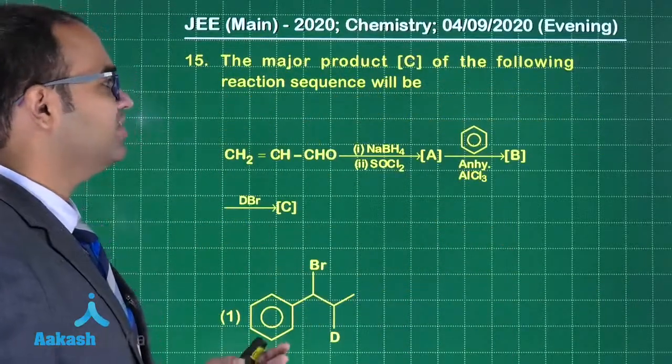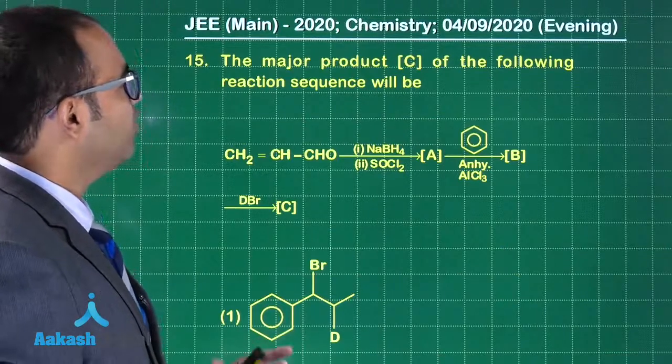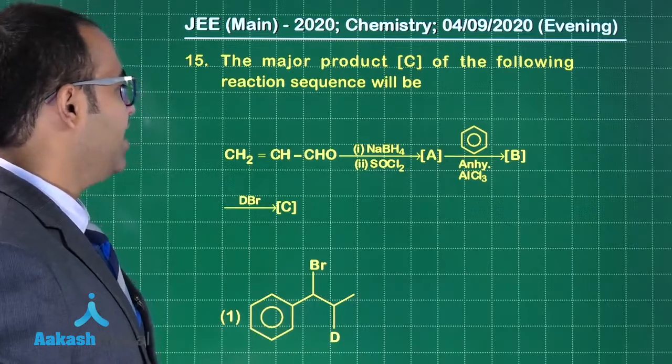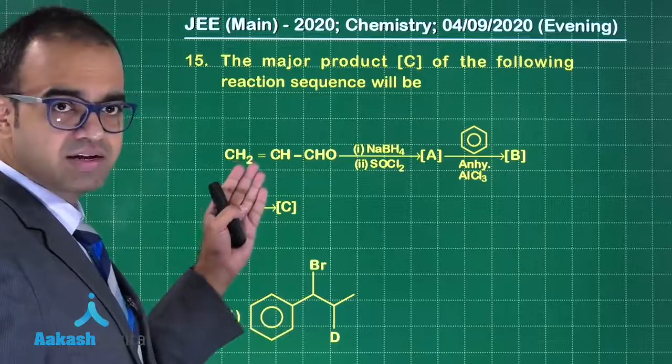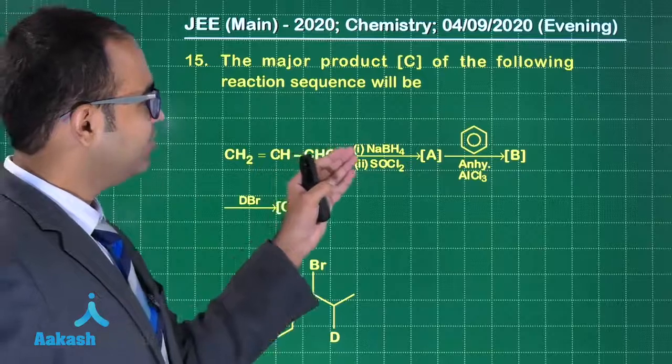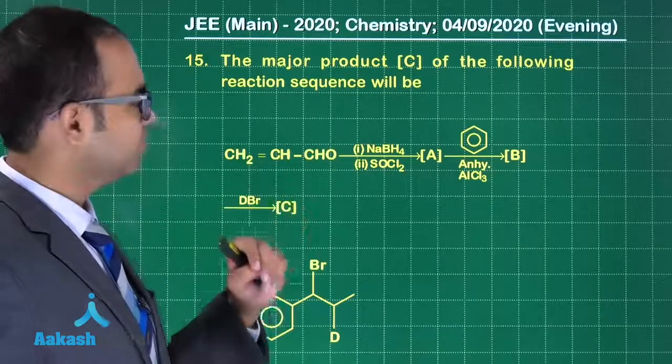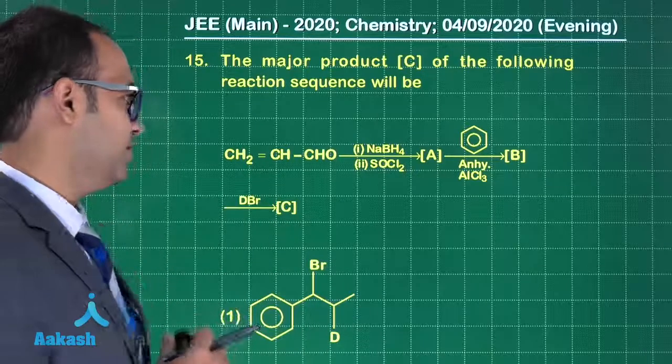Let us move on to the next question. Question number 15, a question from organic chemistry. The major product C of the following reaction sequence. We have an aldehyde group and we have a double bond. To that first we are adding NaBH4. So NaBH4 will reduce CHO. Will it reduce the double bond? No, it will not reduce the double bond.